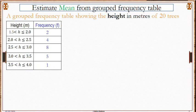This is a grouped frequency table showing the height in meters of 20 trees. We are supposed to estimate the mean from the grouped frequency table.